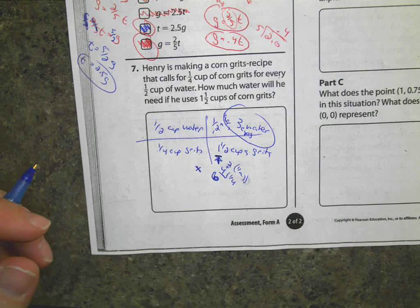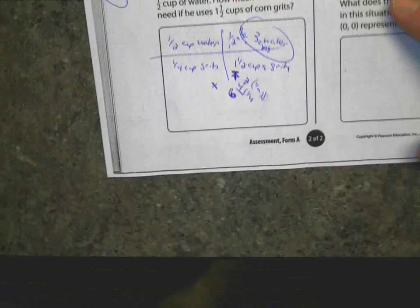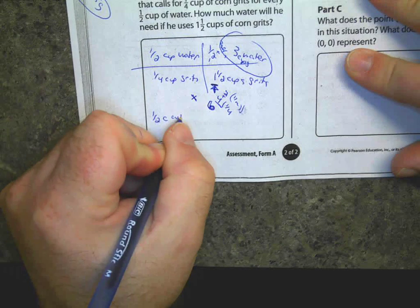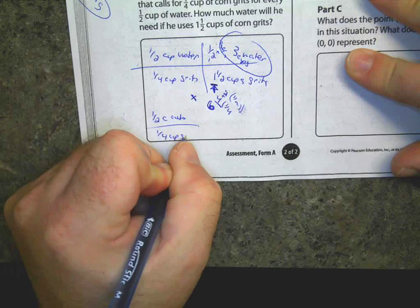Now, I did also hear people say they went and made a unit rate. That works as well. So, let's go and try that on for size. It says one-half cup of water, one-fourth cup of grits.